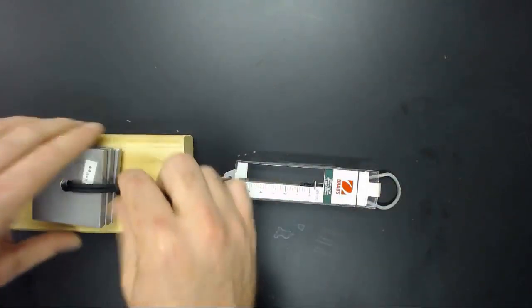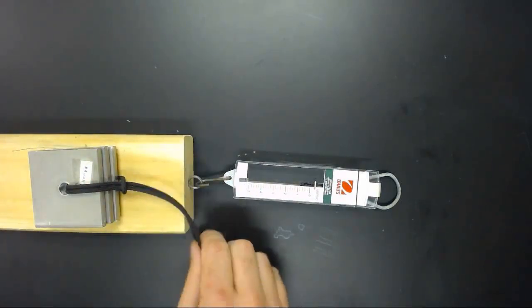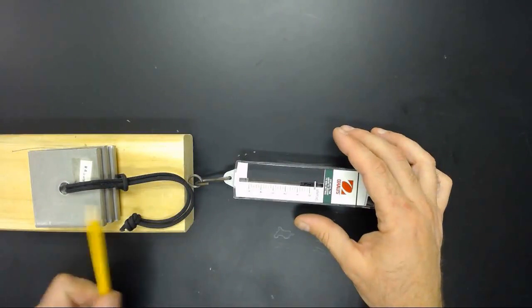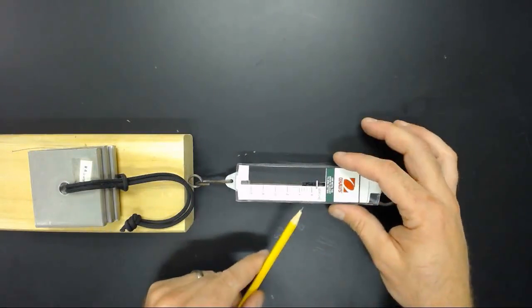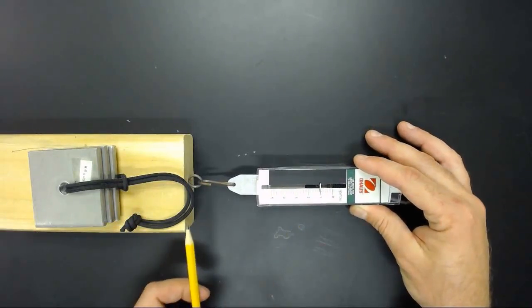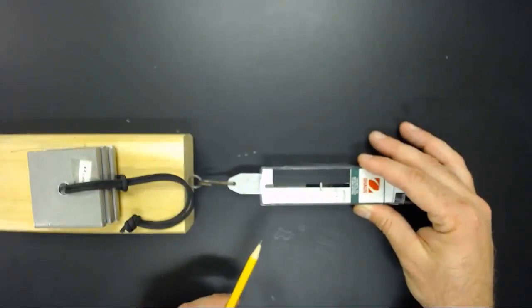Now, we might add more mass to our system. That's fine. The same thing applies. The block is not moving, but we're very slowly going to pull with our spring scale until the point at which the block starts to shift.